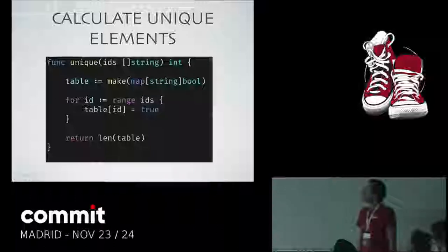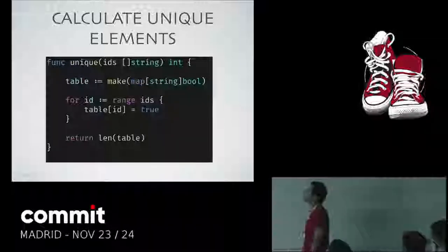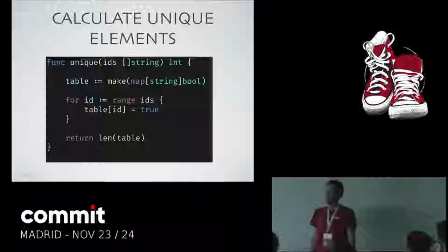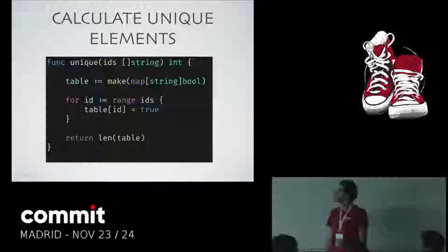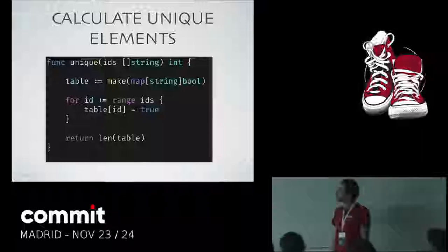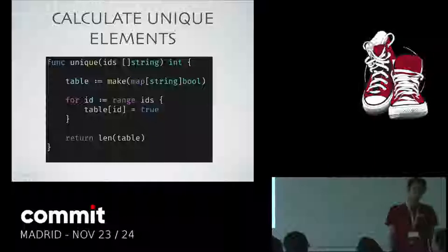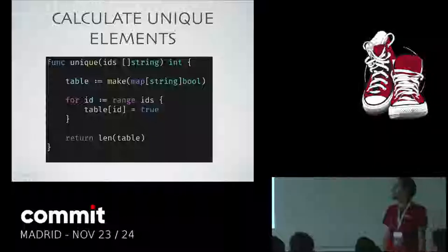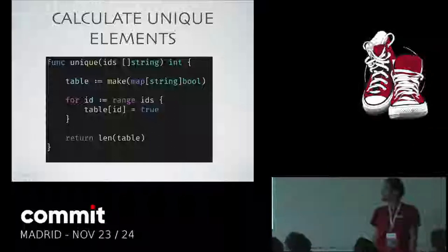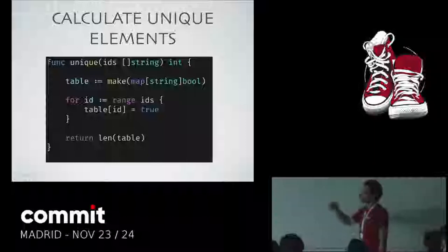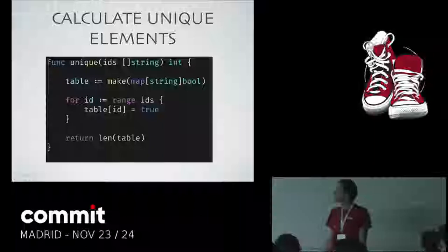I will talk about two problems that we have faced and how we changed the approach. This is some kind of pseudo-Go code. We have a very common problem that everybody can have: how do you calculate how many unique elements you have in a list? It's usually called cardinality.